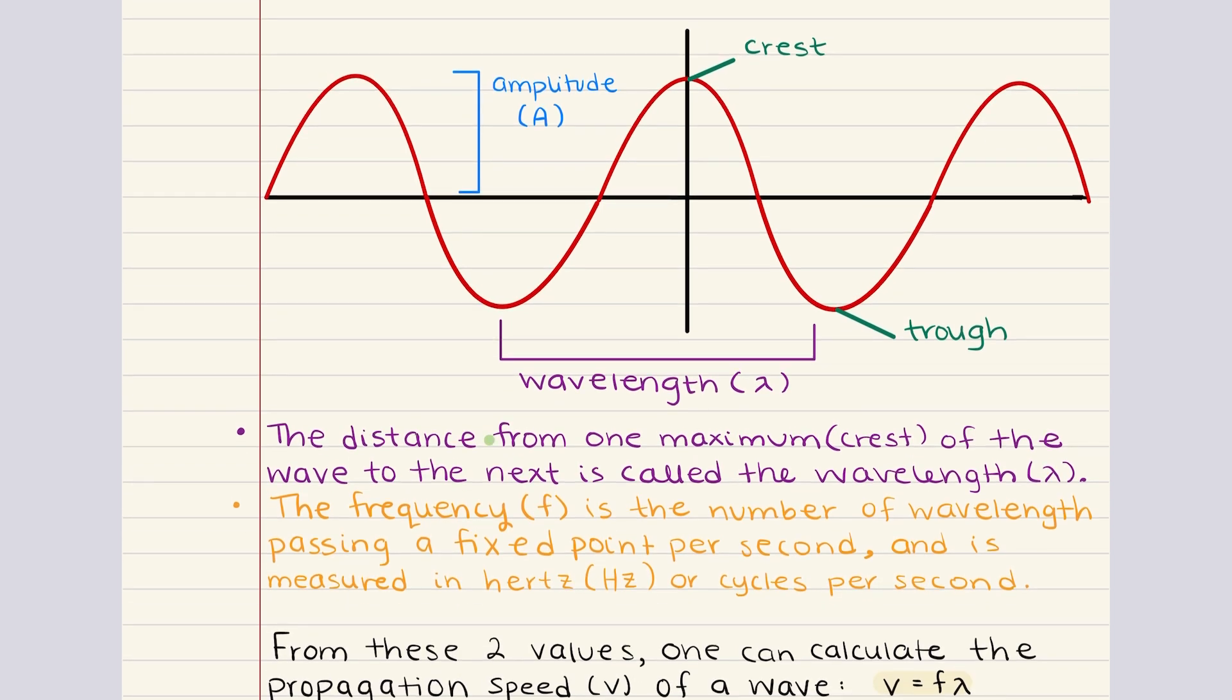The wavelength, denoted as lambda, is the distance between two consecutive points that are in phase, such as two crests or two troughs in a wave. It tells us how long each cycle of the wave is along its path. So a shorter wavelength means that the wave cycles more frequently over a given distance, while a longer wavelength indicates that the cycles are spread further apart. This measurement is important because it helps us determine how energy is transmitted across space through waves.